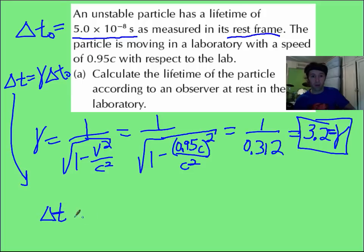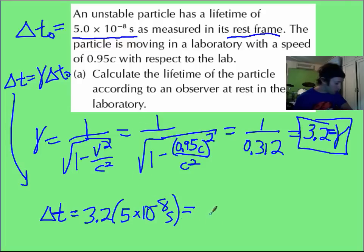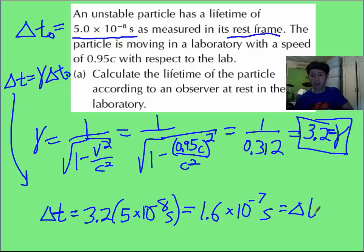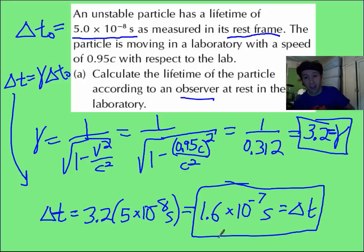So then I take this and I fill it in. The time interval, according to the observer in the laboratory, is 3.2 times that 5 times 10 to the negative 8 seconds. And he ends up with a time of 1.6 times 10 to the negative 7 seconds. And you compare the two times, and you say the observer sees it at a longer time than what the particle itself would have if the particle were measuring its own lifespan. And that does make sense, because this is the non-proper time, which should always be longer.